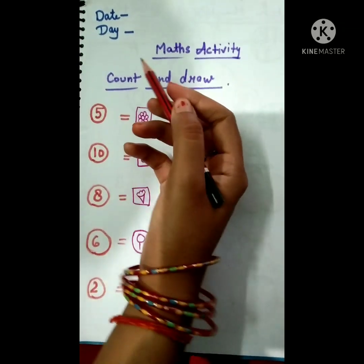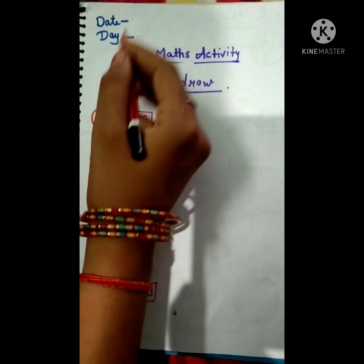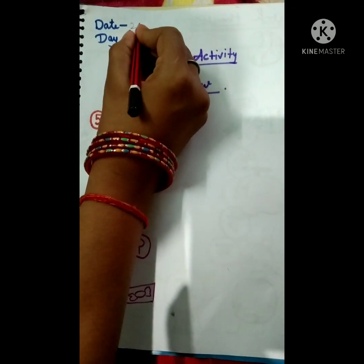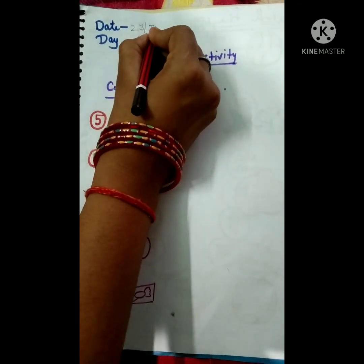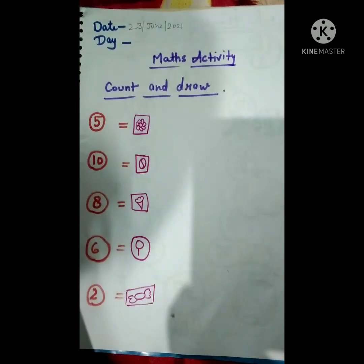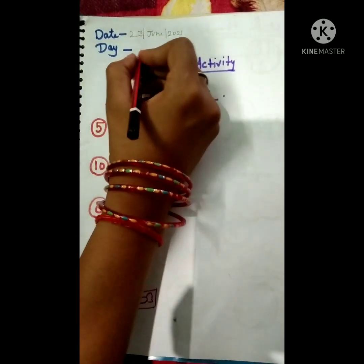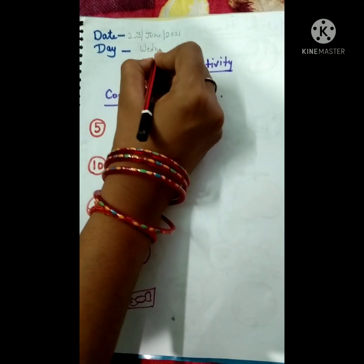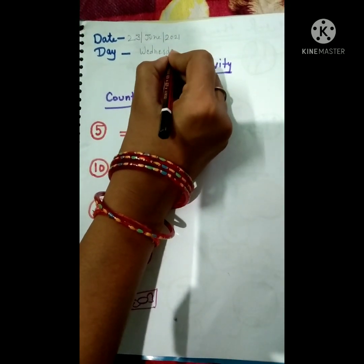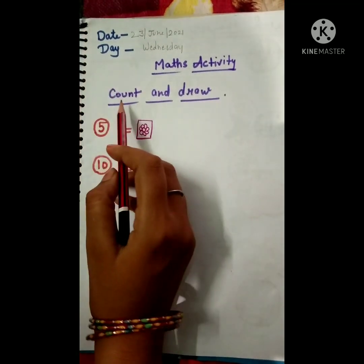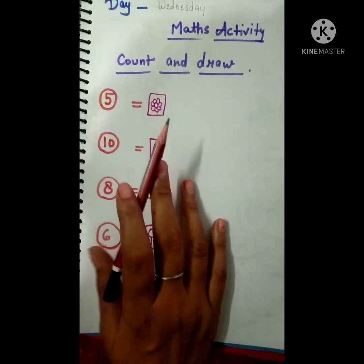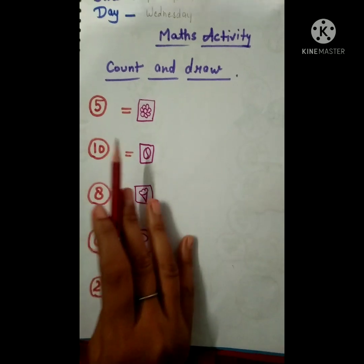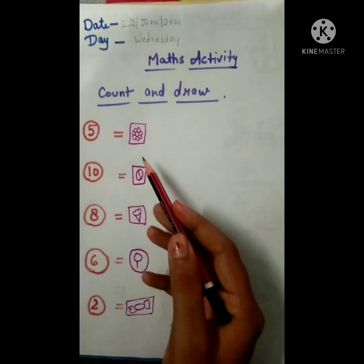Let's start. This is your math activity. Firstly, write down the date — today's date is 23rd June 2021. And which day is today? Today is Wednesday — W-E-D-N-E-S-D-A-Y.